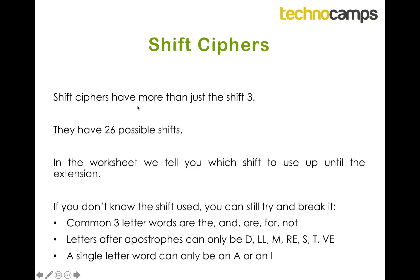Shift ciphers have more than just shift three — there are 26 possible shifts: zero, one, two, all the way up to 25. In the worksheet we're going to tell you which shift to use up until the very last extension question. If you're struggling with that, here are some tips to break it: the most common three-letter words are 'the', 'and', 'are', 'for', and 'not'. Letters after apostrophes can only be D (like 'I'd'), double L (like 'I'll'), M (like 'I'm'), RE (like 'you're'), S, T, or VE. Single letter words can only be A or I. Hopefully you should be able to do the worksheet now — once you've done it, submit your answers online and hopefully you'll get some points.